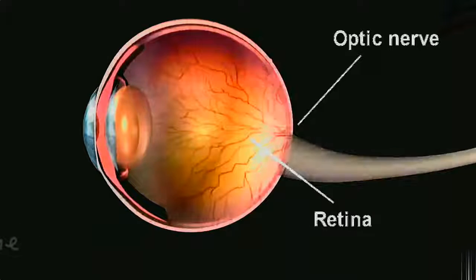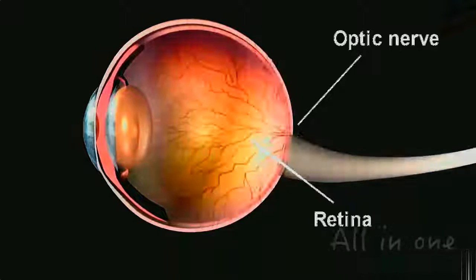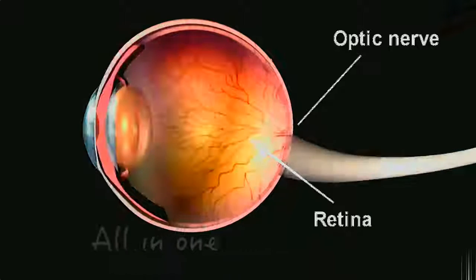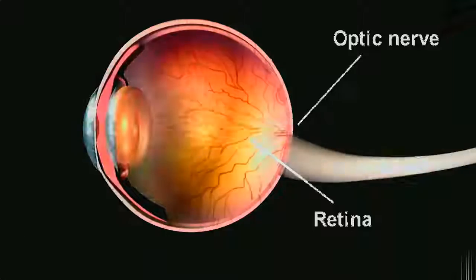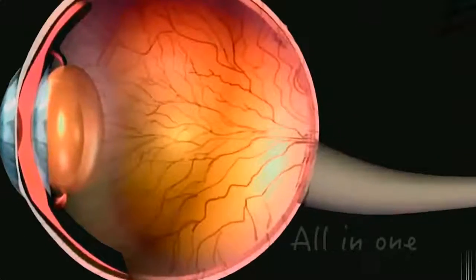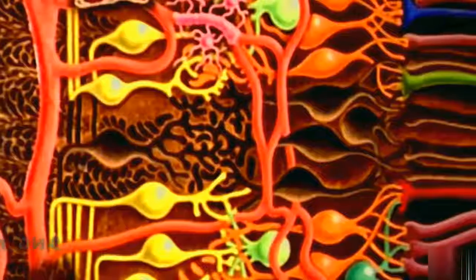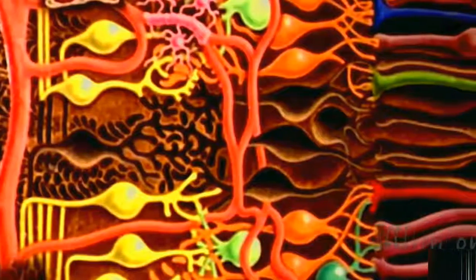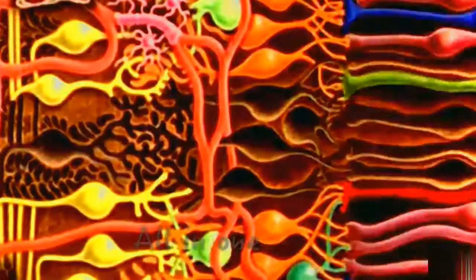The retina is the most important and complex structure in the eyeball. It consists of a complicated arrangement of rods and cones which convert light waves into nerve impulses.